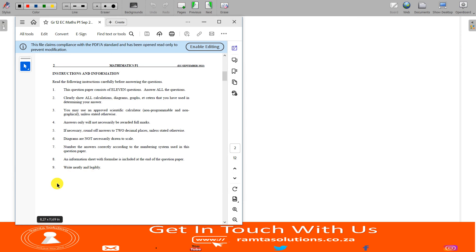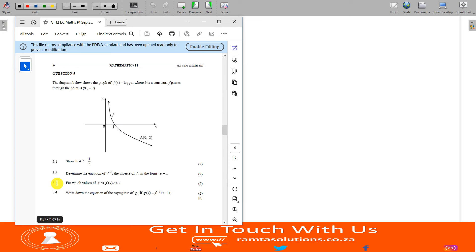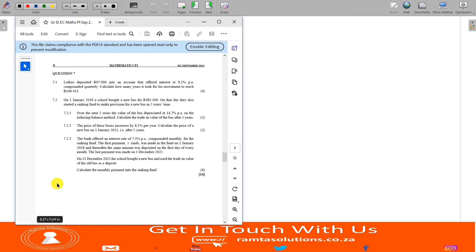Without any waste of time, let's get to our finance section of this paper. Finance is normally in question six and seven. Here we are, question seven. So it says 7.1, Lufezo deposited 97,000 rands into an account that offered interest at 9.1% per annum compounded quarterly. Calculate how many years it took for this investment to reach 166,433 rands.